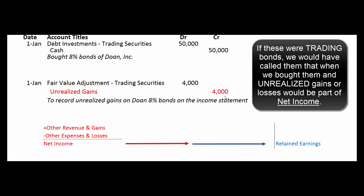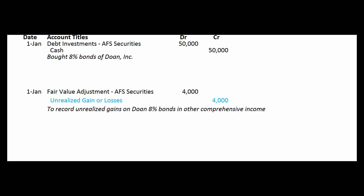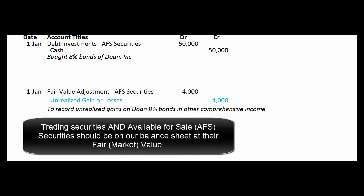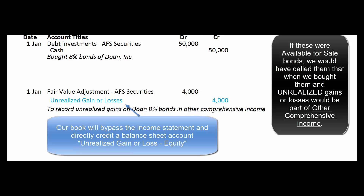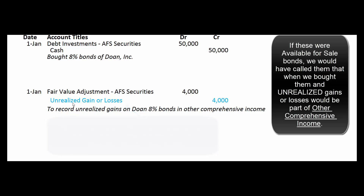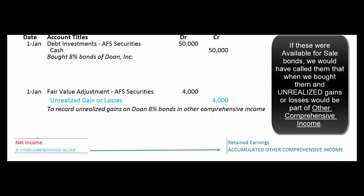Now if they were available for sale securities, the treatment is a little different. We didn't tell the world we're smart traders — we just said we have some extra cash and we're tired of earning half a percent in our savings account. We're still going to mark them to market and put them on our books at fair market value — in this case they've gone up by $4,000, so we use an account called fair value adjustment for available for sale securities, now carried at $54,000. But that unrealized gain or loss is part of other comprehensive income — it's at the bottom of the income statement, stuff that hasn't happened yet but is important enough to show on our financial statements. That account then closes into accumulated other comprehensive income on our balance sheet.